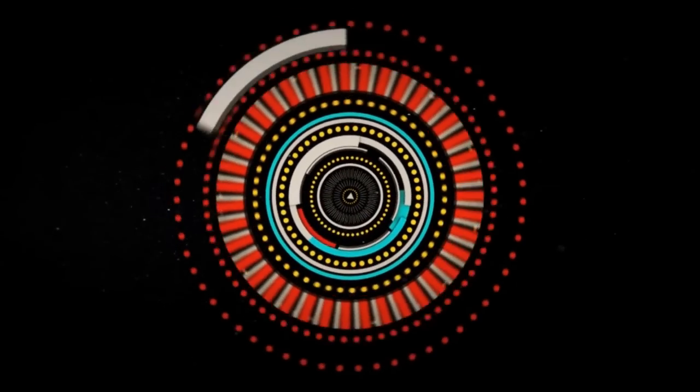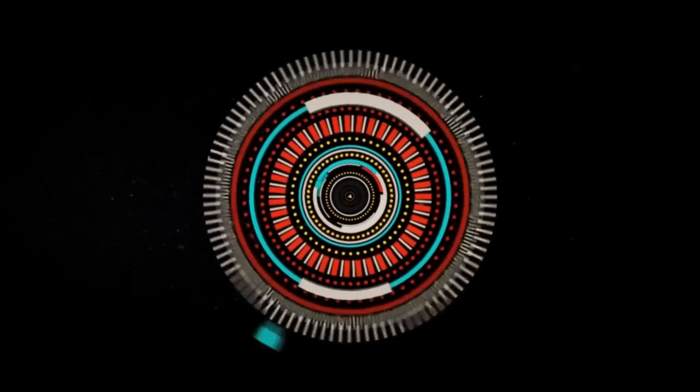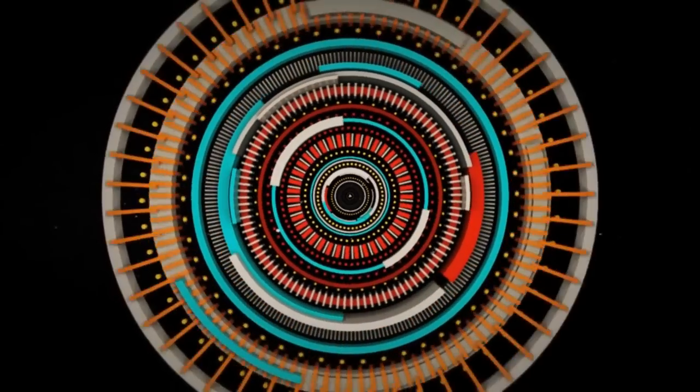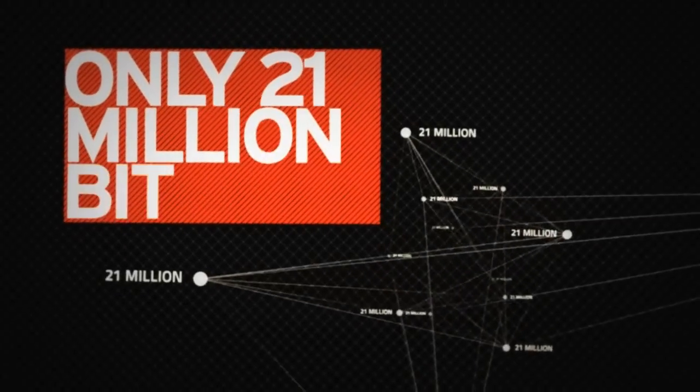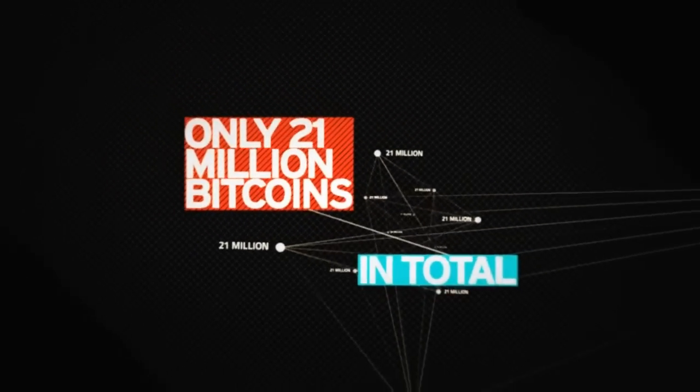Islam forbids the charging of interest, a major problem for the Rothschild banking system. Until a few hundred years ago, charging interest was also forbidden in the Christian world and was even punishable by death. It was considered exploitation and enslavement.